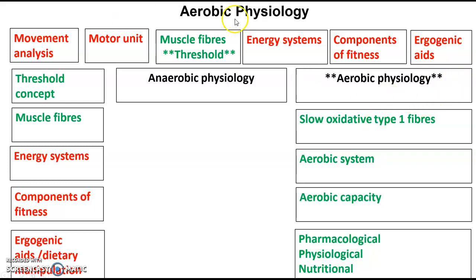If you have a look through the aerobic pathway so far, we've had a look at our slow oxidative type 1 muscle fibres, the structure and functional characteristics within those, and also the aerobic energy system and how that provides energy — how we synthesise ATP, lots of it, 38 to be exact, during low intensity, high duration work such as a marathon runner.